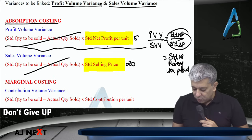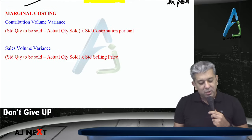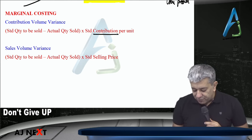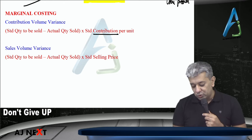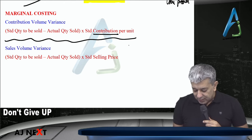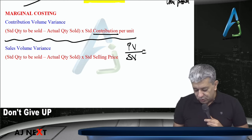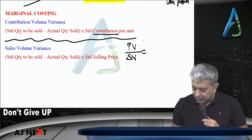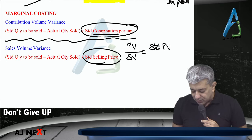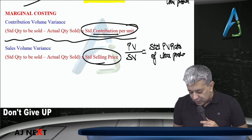This is nothing but the standard net profit ratio of the product. Now the same thing under marginal costing — not much changes. Standard profit per unit gets replaced by standard contribution per unit. If we divide, contribution volume variance divided by sales volume variance equals standard contribution per unit divided by standard selling price, which is nothing but the standard PV ratio of the product.